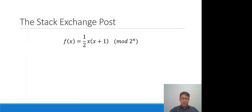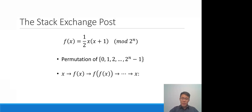Instead of evaluating this function over the integers, it is evaluated mod 2^n. First, it is pointed out in the post that this actually forms a permutation of the elements in Z mod 2^n. Secondly, now that we know f(x) is a permutation, if we start from x and keep applying f iteratively, eventually we get back to x. The natural question is: how long would these cycles be? It turns out empirically these cycles are really long, and in a follow-up to the post it is proved that for sufficiently large n, the longest cycle is at least 2^(n/10).